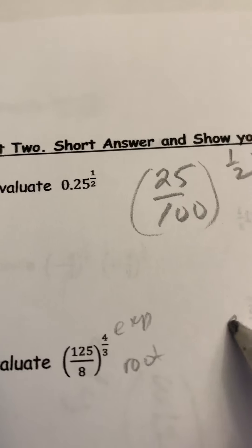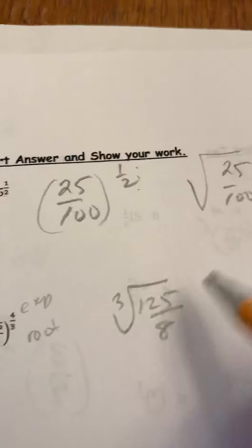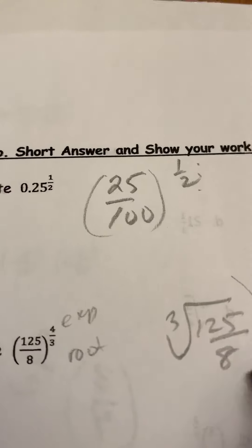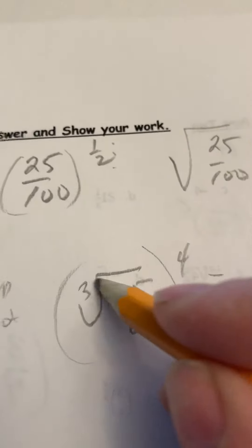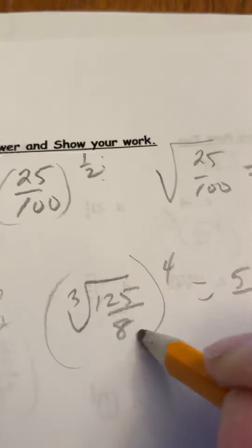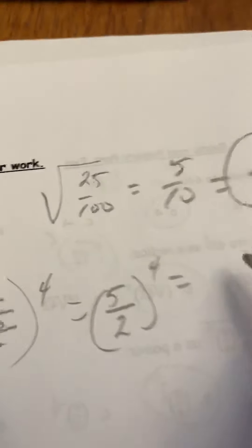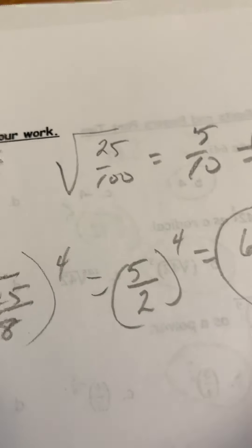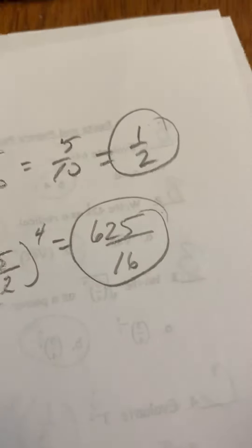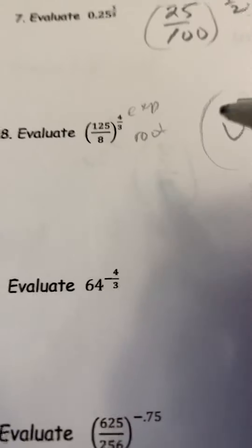Here we've got an exponent of 4 and a root of 3, so we're going to find the cube root of 125 over 8 and then raise that to the exponent 4. The cube root of 125 is 5, the cube root of 8 is 2, and we raise that to the exponent 4, giving us 625 over 16.